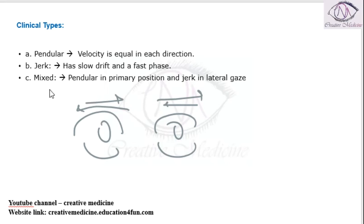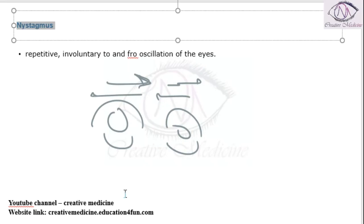In mixed, it is pendular but when the patient tries to see towards the lateral side it becomes jerk type. So these are the types of nystagmus.